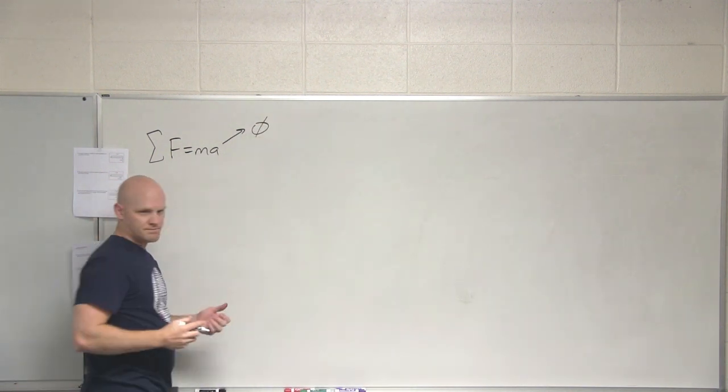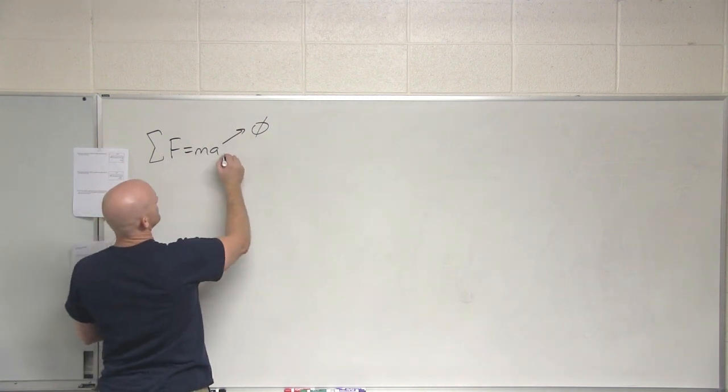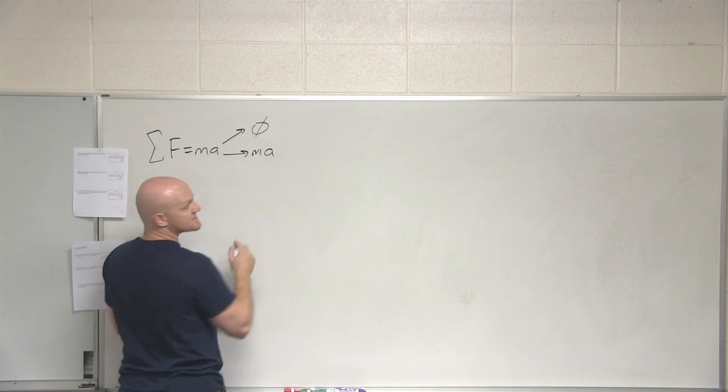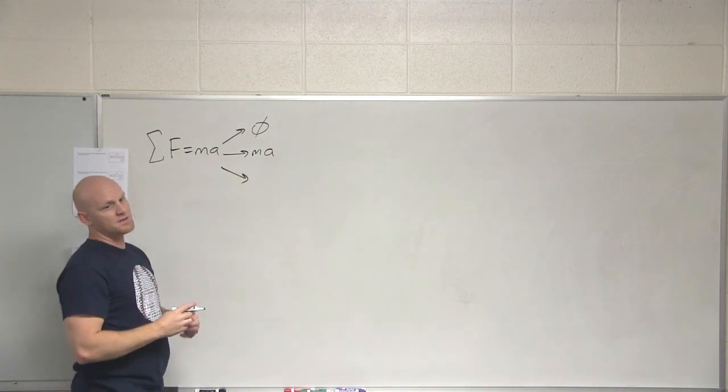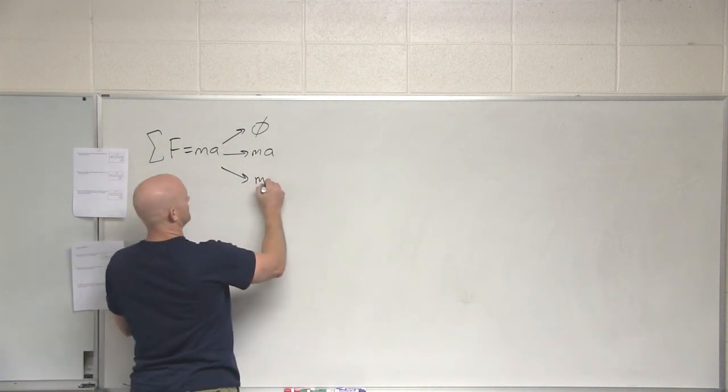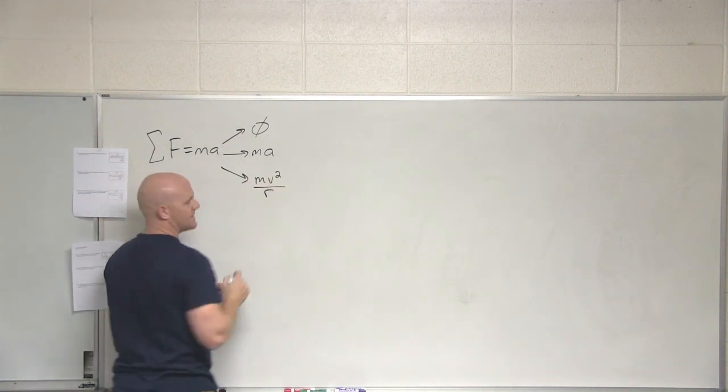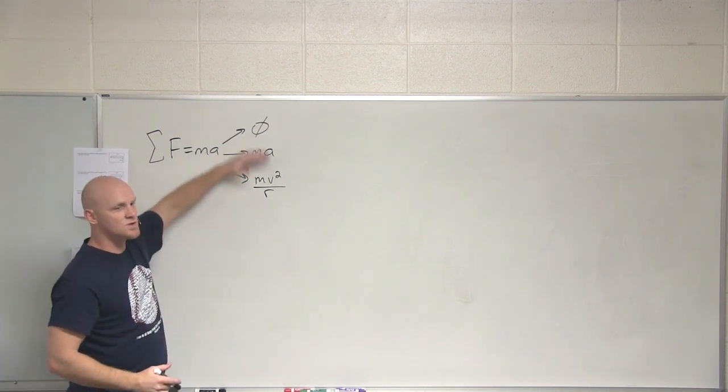Great, so equilibrium, what we've learned about. The sum of the forces is zero—either not moving or at constant velocity. Or we learned that it could simply be ma, or when there's uniform circular motion, in the radial direction, the sum of the forces adds up to mv²/R. Sweet, so these were the three situations we looked at.